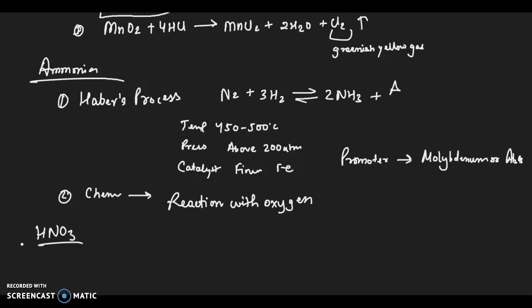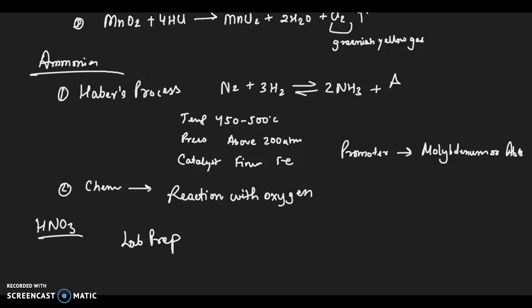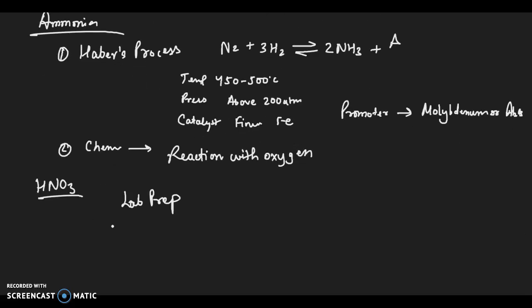This chapter is ammonia. You have to do all the laboratory preparations. Then we have manufacture of nitric acid, that is by Ostwald process, where there are three chambers: catalytic, oxidation chamber, and then absorption tower.